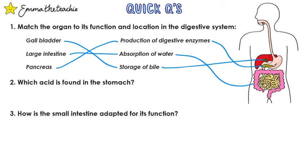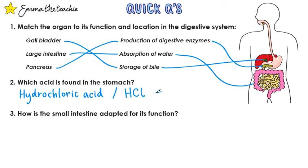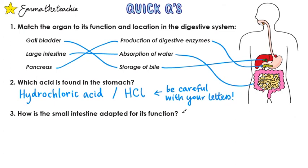Question two: which acid is found in the stomach? This is hydrochloric acid, which can also be written as HCl. If you write it with the symbols, make sure you're careful with the letters — H and C need to be capitals and l needs to be lowercase.